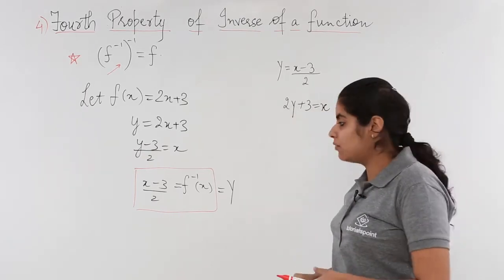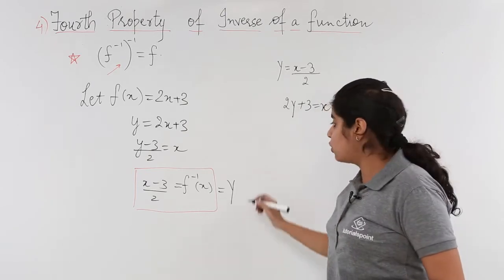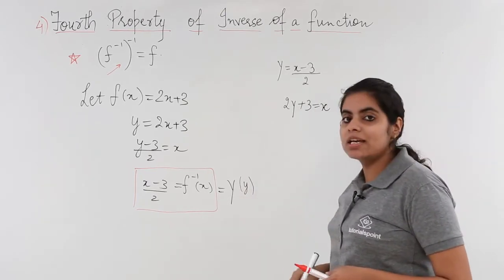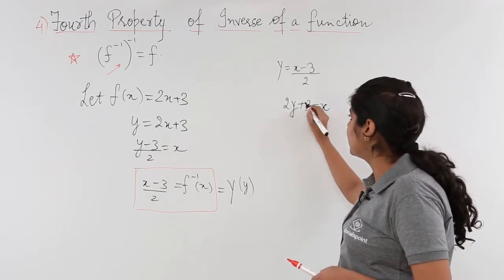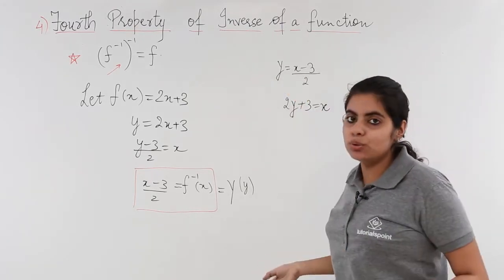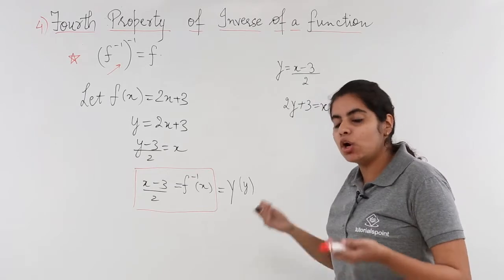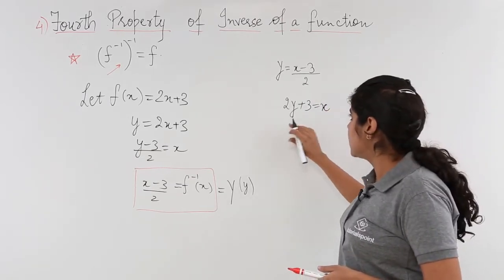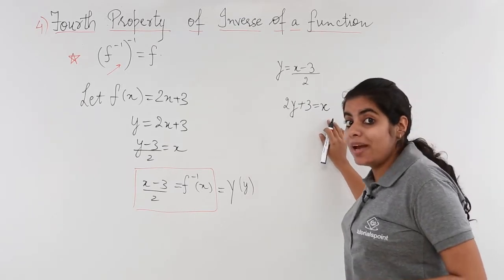Now I have taken a different y variable. You may also keep the same y variable throughout - it's up to you to use a different variable or the same one. When we found the inverse, 2y + 3 = x.